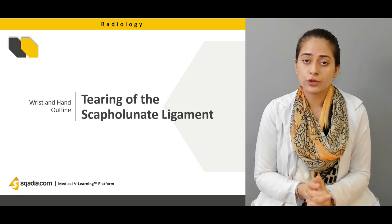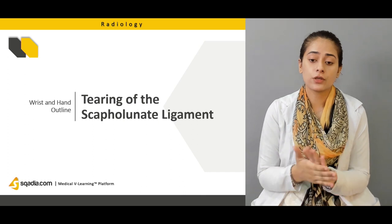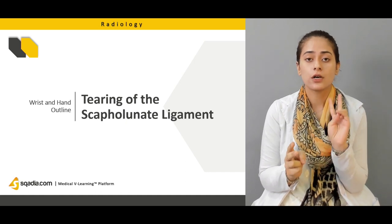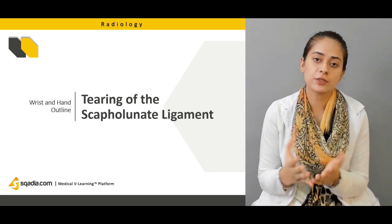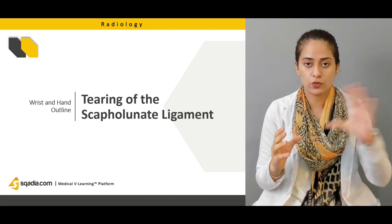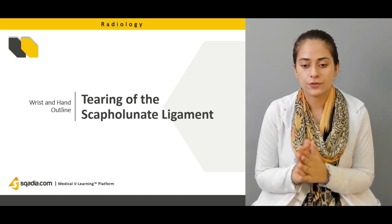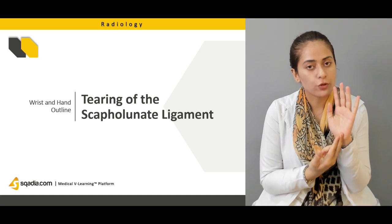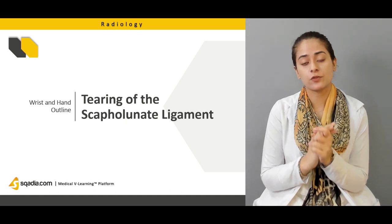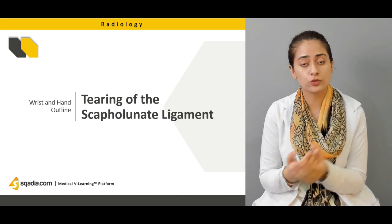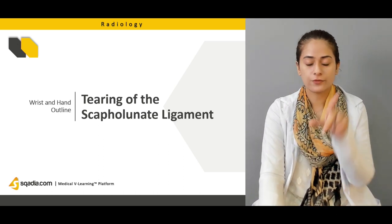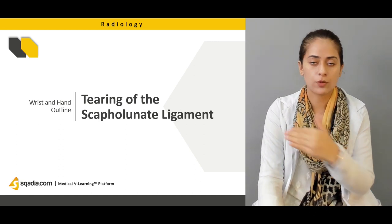Then we will also talk about tearing of the scapholunate ligament. Scaphoid and lunate are two carpal bones joined by a ligament. A ligament is a structure that joins one bone to another bone, while a tendon is a structure that joins a muscle to a bone. The scapholunate ligament is present between the scaphoid carpal bone and the lunate carpal bone, which is in the proximal carpal layer.